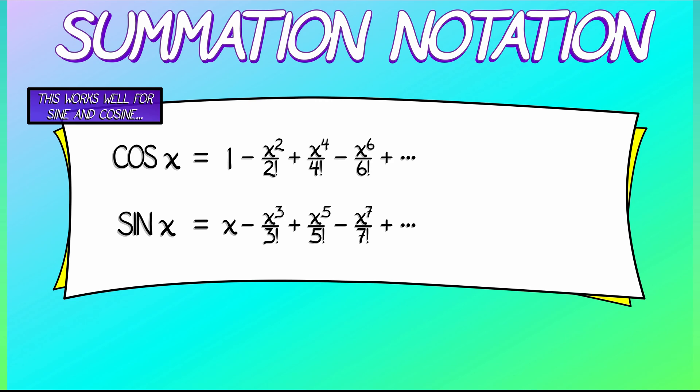For cosine, we're going to take the sum, as k goes from 0 to infinity, of what? We're going to have a negative 1 to the k. That's going to start us off with a positive term and then switch positive, negative, positive, negative. Then, for the rest of it, we're not going to have x to the k divided by something. We're going to have x to the 2 times k divided by quantity, 2 times k factorial. That's going to give us only even powers of x, and you can check to make sure that this is correct.